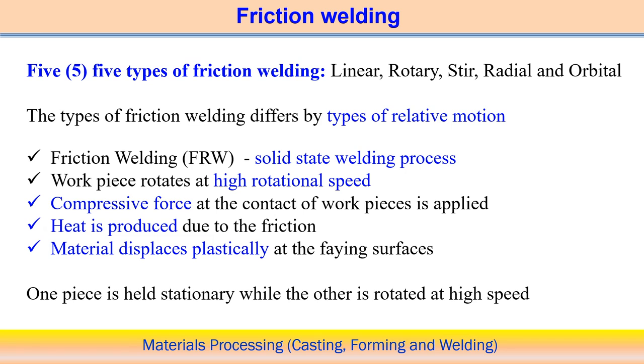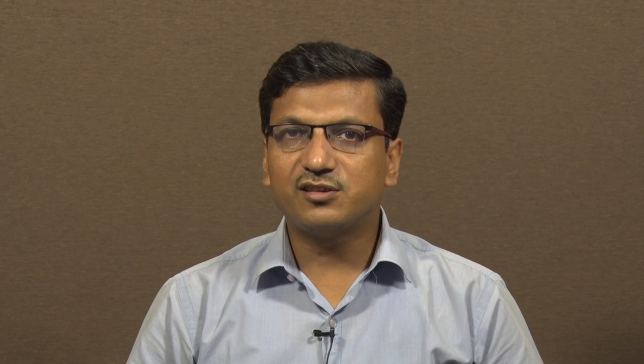In friction welding, relative motion generates frictional heat at the interface. The workpiece rotates at high rotational speed to generate more frictional heat, and a compressive force is applied at the contact. The plasticized metal comes into contact and bonding occurs between the two components. Heat is produced due to friction, and material must be displaced plastically at the faying surface. Some flash forms with the application of compressive pressure at the interface.